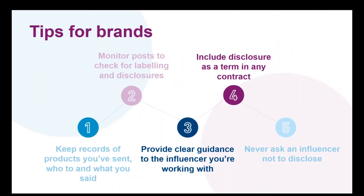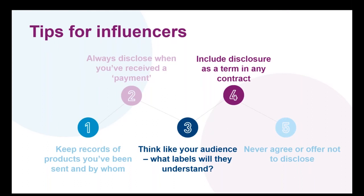Some general tips: for brands, keep records of products you've sent, who to, and what you've said. Carry out reasonable monitoring of posts to check disclosure is being made. Provide clear guidance to any influencers you're working with and, wherever there is a contract, include disclosure as a specific term. Never ask an influencer not to disclose — you're asking someone to break the law. For influencers: keep records of products you've been sent and by whom, always disclose whenever you've received any form of payment, think like your audience about what label they'll understand, make sure disclosure is a specific contract term, and never agree or offer not to disclose — and if someone asks you to, let us know.